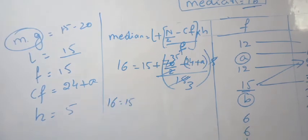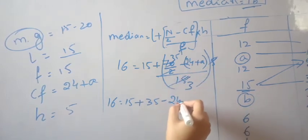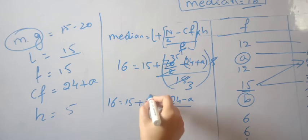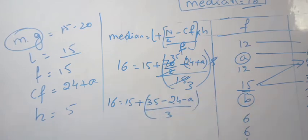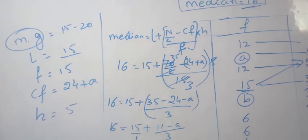So 16 = 15 + (35 - 24 - A)/3, which simplifies to 16 = 15 + (11-A)/3. Taking LCM of 3, we get 16 = (45 + 11 - A)/3.